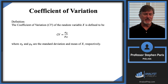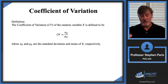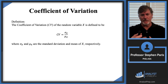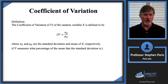Likewise, if I just gave you the variance or the standard deviation of a random variable, it might tell you something about how spread out the data is, but it wouldn't tell you anything about what the mean was. So you kind of need both pieces. With the coefficient of variation, you get a bigger picture idea — it measures what percentage of the mean the standard deviation is.